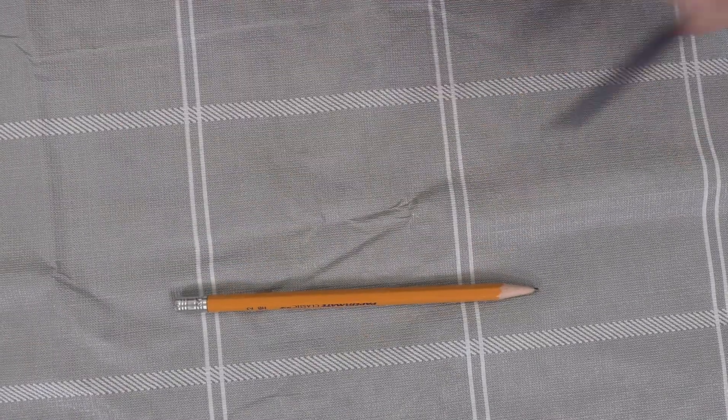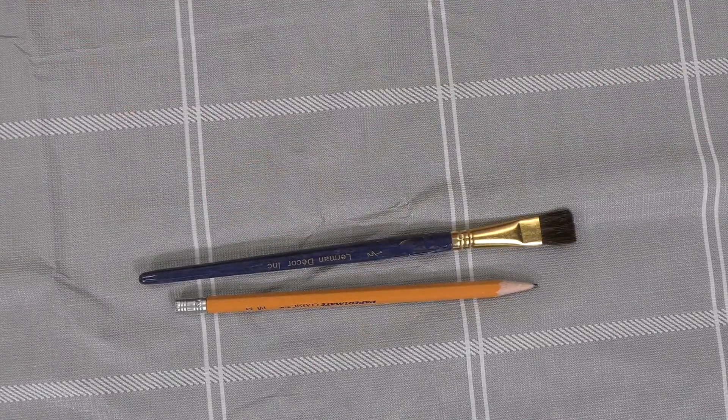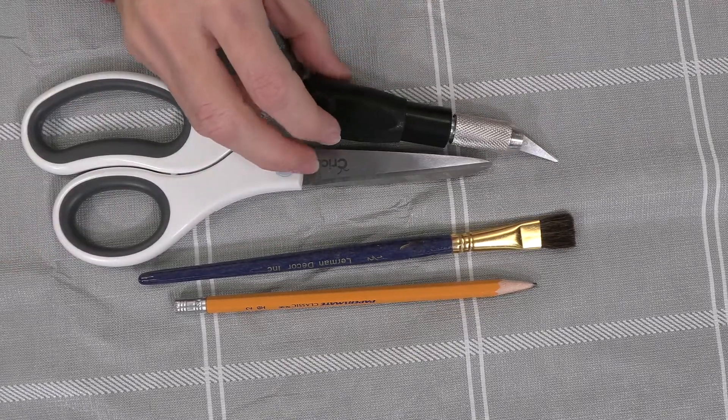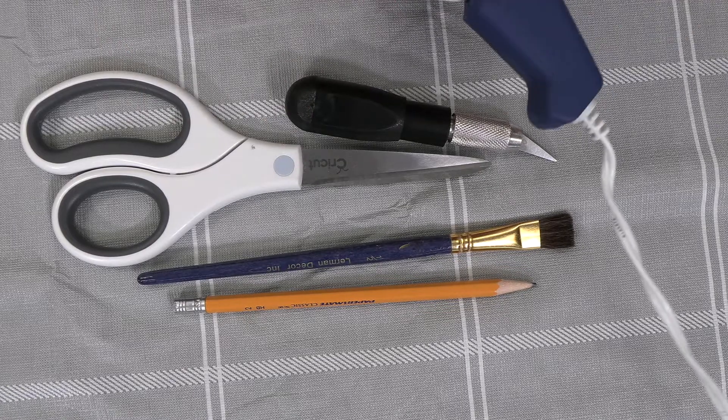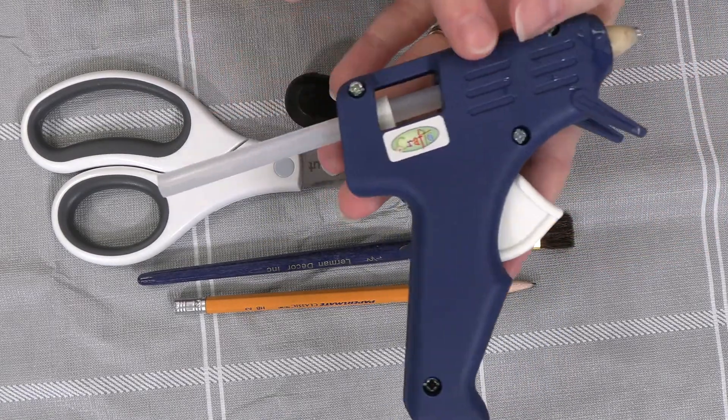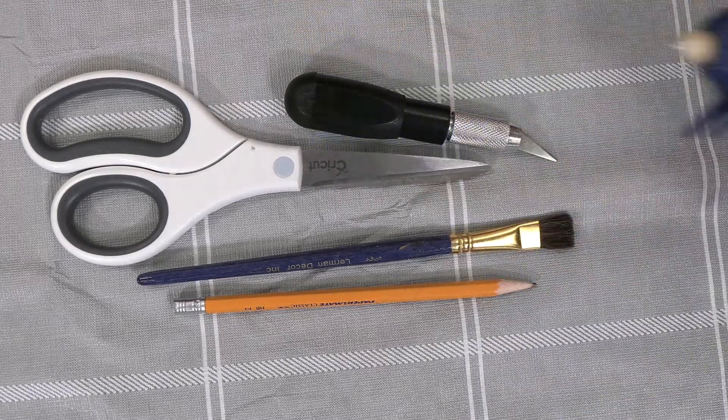What you're going to need to provide from home is a pencil or some type of writing device, a paintbrush, a pair of scissors or an exacto knife, and a hot glue gun works best but you can also use white glue.